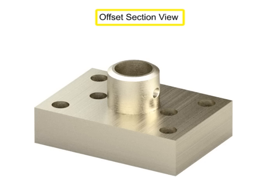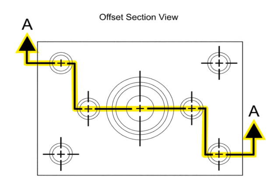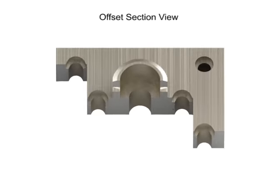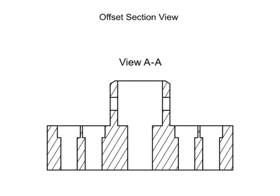An offset section results when the cutting plane line is bent to show internal features that are not in a straight line. The bends in the cutting plane are not shown in the section view. The new section view makes the internal features appear as if they are in a straight line. It's important to remember that they are not. The section view is created to illustrate the interior features of the part.